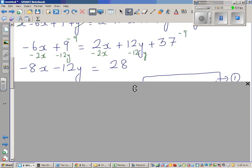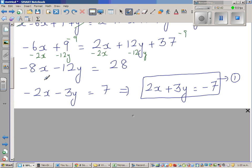And dividing by 4, you get -2x - 3y = 7. And multiplying by negative 1, you get this result.